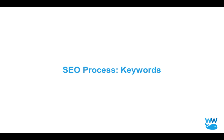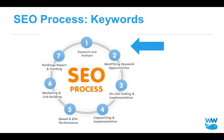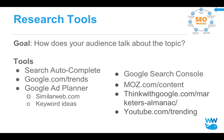SEO process keywords — what do I mean by these keywords? I'm going to share exactly the tools that we use internally to do this phase of research. There's search autocomplete inside of Google, google.com/trends, the Google Ad Planner for keyword ideas, a tool called SimilarWeb, the Google Search Console, moz.com — a very powerful search engine tool with a free and paid version — Think with Google, and also YouTube as a search engine. We're going to go through each one of these.